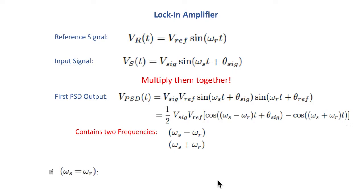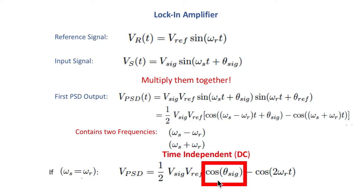So if they're equal to one another, what happens is we get the PSD output of two different signals. One that's a time independent DC signal and another that's a time dependent AC signal that's at twice the frequency.